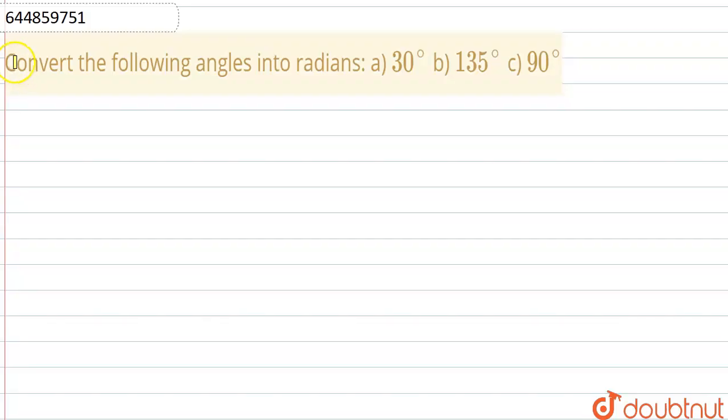Hello everyone, so here is a question. Convert the following angles into radians: a) 30 degrees, b) 135 degrees, and c) 90 degrees.